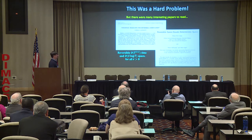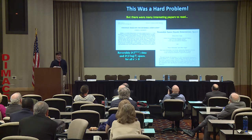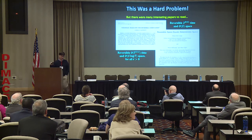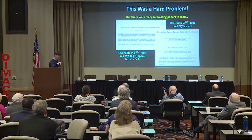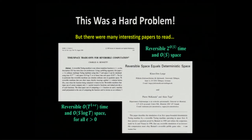There was another simulation by Longa, McKenzie, and Tapp: 'Reversible space equals deterministic space.' This one was extremely space efficient — order s space to reversibly simulate an s-space computation — but in the worst case it could take exponential time, order 2-to-the-s time. So these gave different trade-offs: Bennett was very good with respect to time, and Longa-McKenzie-Tapp was very good with respect to space.